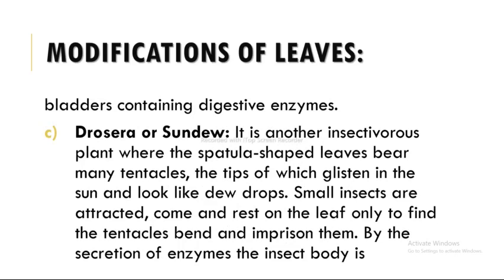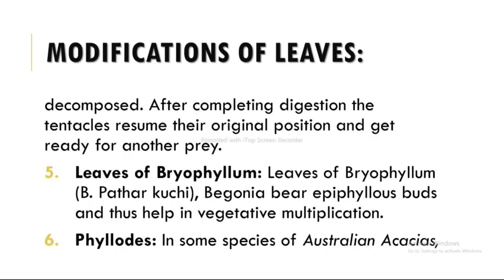The next modification is Drosera or sundew, another insectivorous plant where spatula-shaped leaves bear many tentacles, the tips of which glisten in the sun and look like dew drops. Small insects are attracted, come and rest on the leaf, only to find the tentacles bent and imprisoning them by secretion of enzymes. The insect body is decomposed. After completing digestion, the tentacles resume their original position and get ready for another prey.